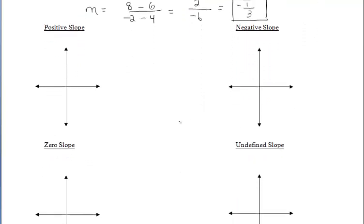Now let's talk about the difference between positive slope, negative slope, zero slope, and undefined. Reading from left to right, positive slope is going to be a line that increases. So if we choose two points on that line, we're going to rise up, which is positive, and go to the right, which is positive, which means we have a positive slope.